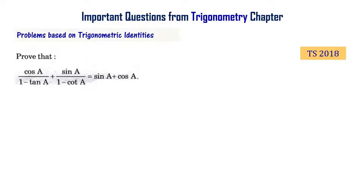Prove that cos A divided by 1 minus tan A, plus sin A divided by 1 minus cot A, equals sin A plus cos A. This is a Telangana final exam 2018 question.